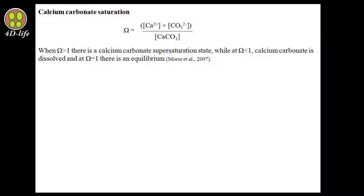We can represent the calcium carbonate saturation rate with omega (Ω). When omega is greater than 1, there is a calcium carbonate supersaturation state and calcium carbonate structures can be created. When omega is less than 1, calcium carbonate dissolves — meaning it starts to dissolve in seawater. When omega equals 1, there is equilibrium, meaning there is no dissolution or precipitation.